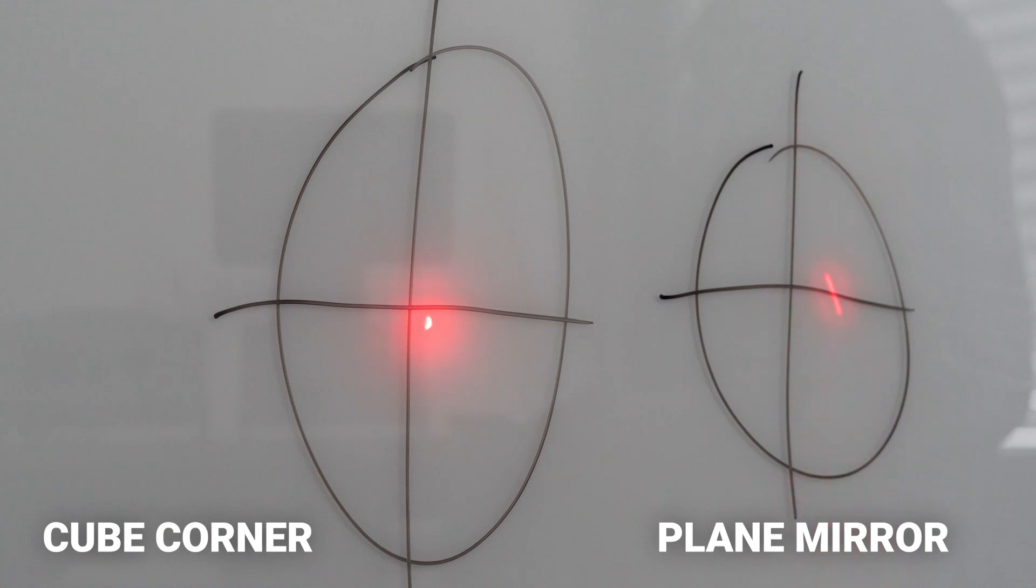In comparison, the cube corner dot stays right on target and the beam path stays perfectly aligned.